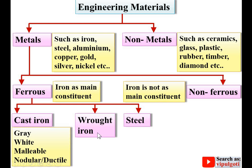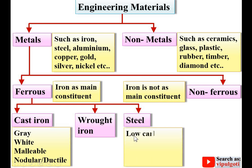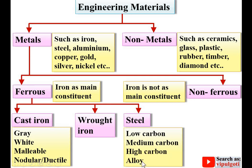Wrought iron is not classified into further categories. Steel is further classified into four different categories: low carbon steel, medium carbon steel, high carbon steel, and alloy steel.